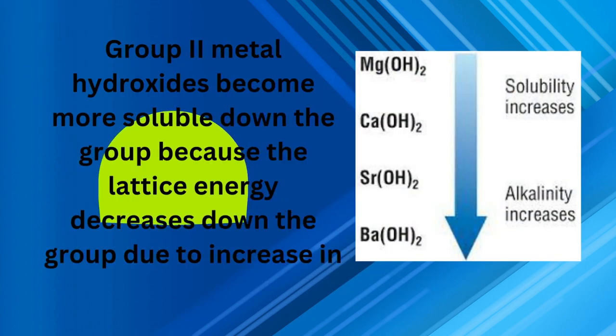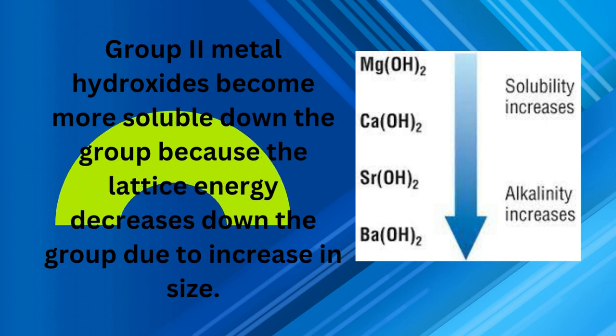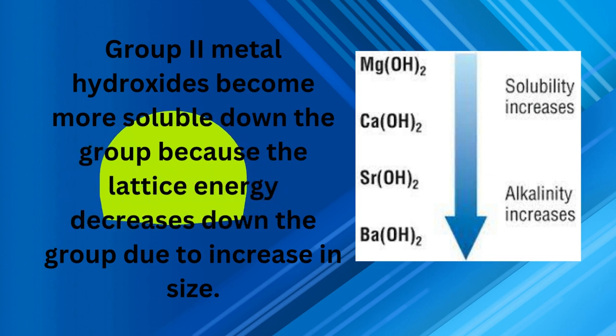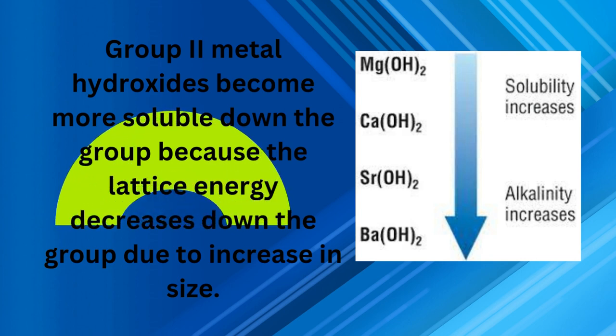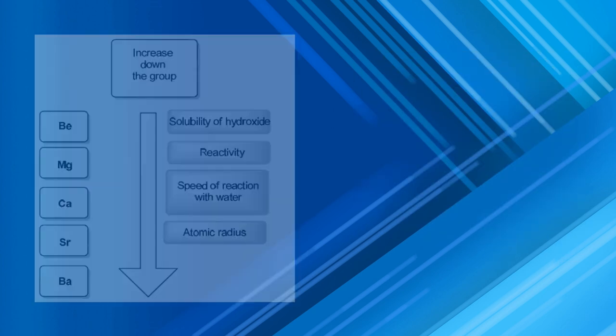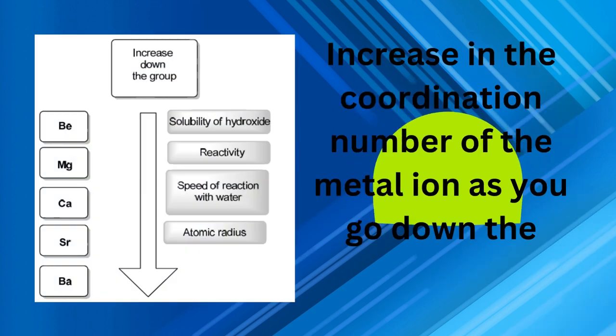Group 2A metal hydroxides become more soluble down the group because the lattice energy decreases down the group due to increase in size. The coordination number of the metal ion also increases as you go down the column.